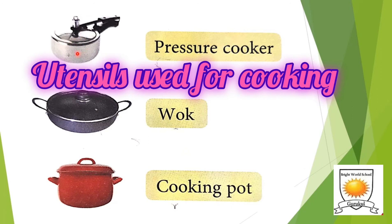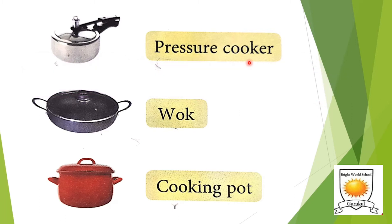The first utensil is the pressure cooker, which is used to steam or boil vegetables and rice. A wok is a large bowl-shaped utensil used for frying vegetables. A pot, also known as a cooking pot, is used for steaming and boiling milk, vegetables, and rice.